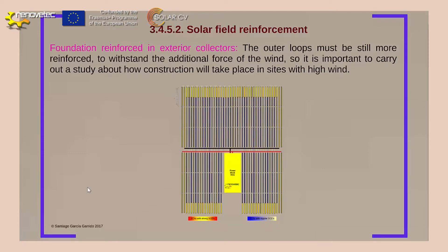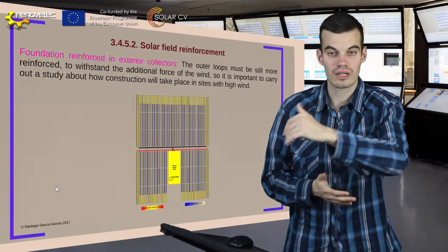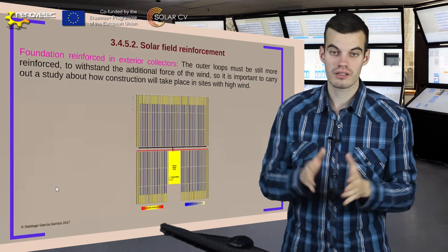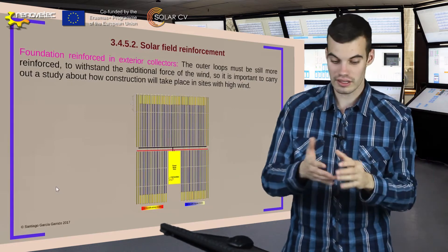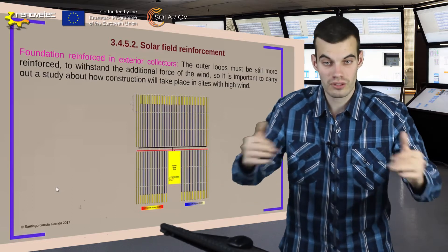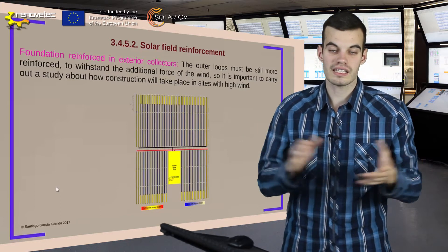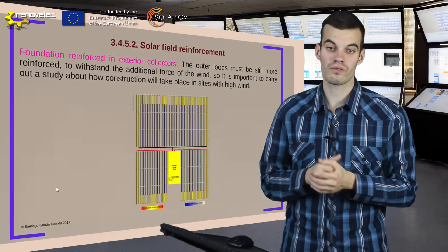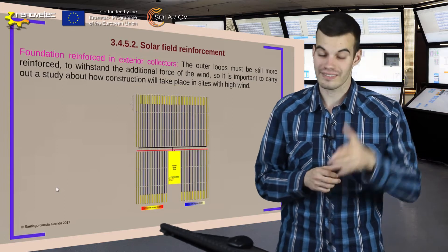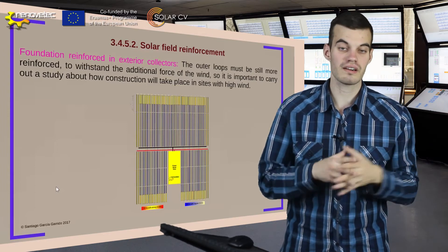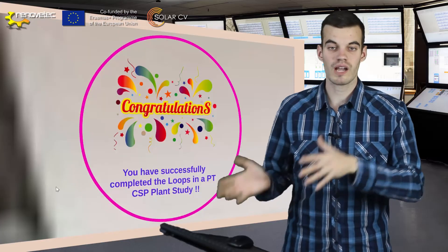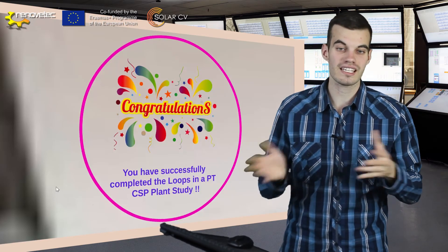To finish, we must understand that the outer loops must be reinforced. The inner loops in the solar field are reinforced because they are near the power block and the other loops help reinforce them. However, the outer loops are not reinforced because they are at the perimeter. So the material of their foundation and their piles must be of higher quality, to ensure that the overall performance of our solar field is optimum. We have successfully finished studying loops in a PT CSP plant.